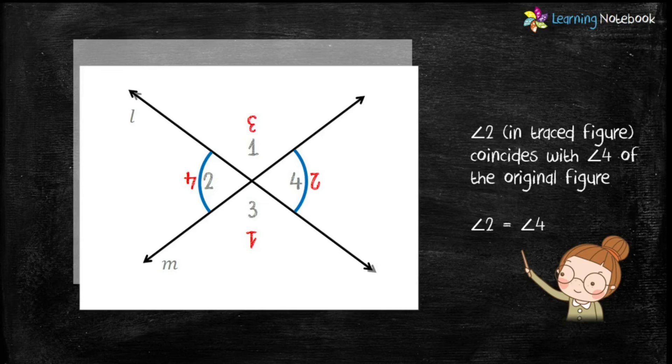So students, through this simple activity, we have verified that vertically opposite angles are equal.